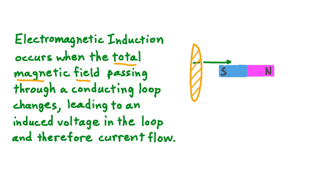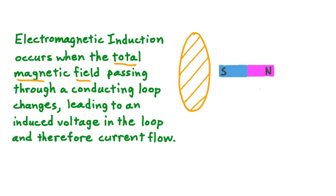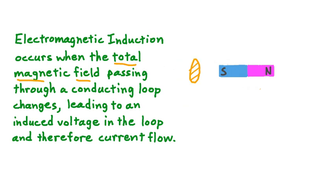We could change the magnetic field experienced by a loop, like we did by moving our magnet, or as an alternative, we could keep our magnet stationary and change the size of the loop. If we either increase or decrease that size, so long as the total area of the loop is changing — even in a constant magnetic field — then the total magnetic field passing through the loop is changing, and therefore current is induced.